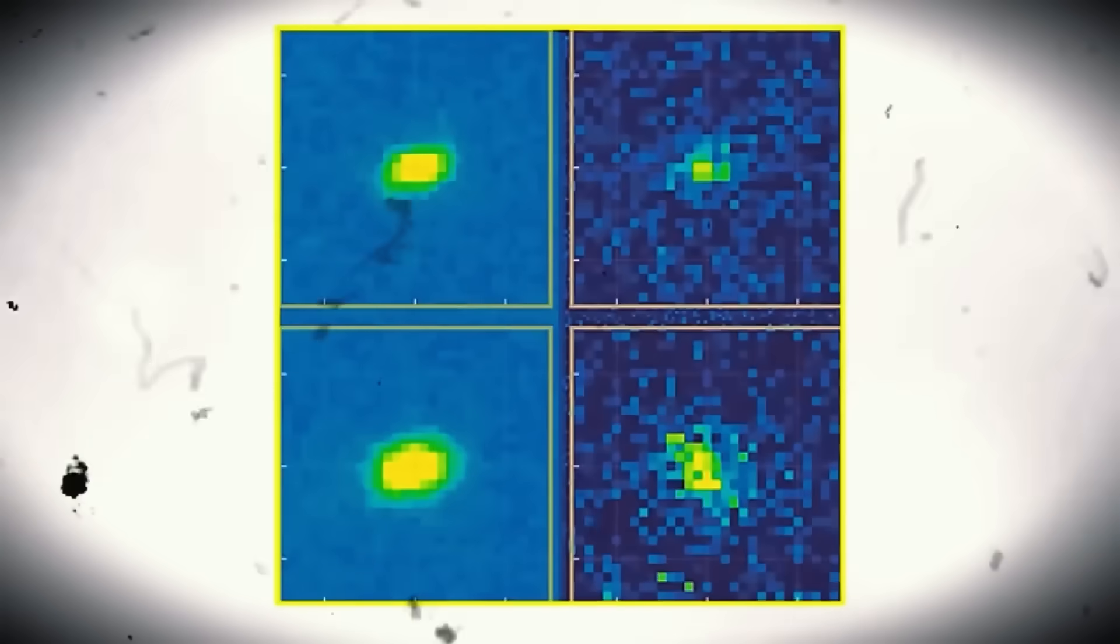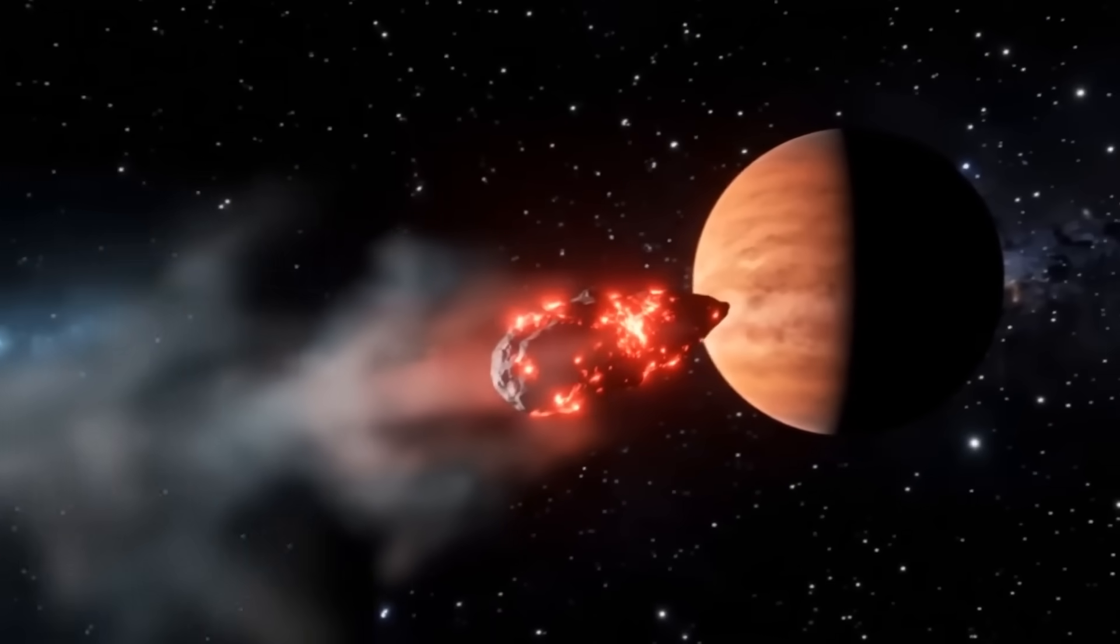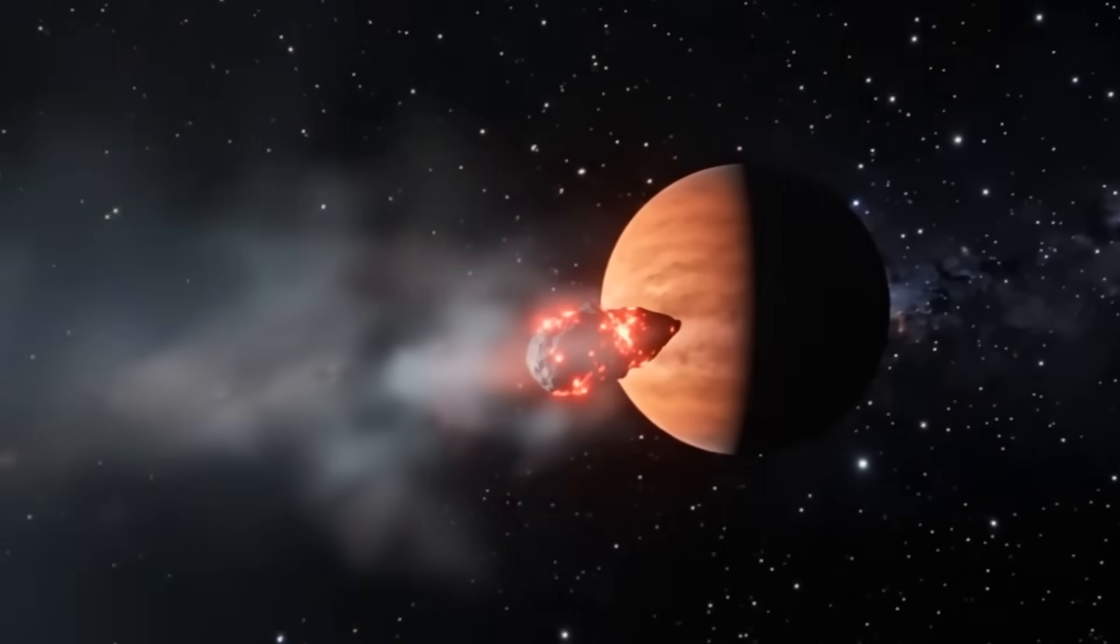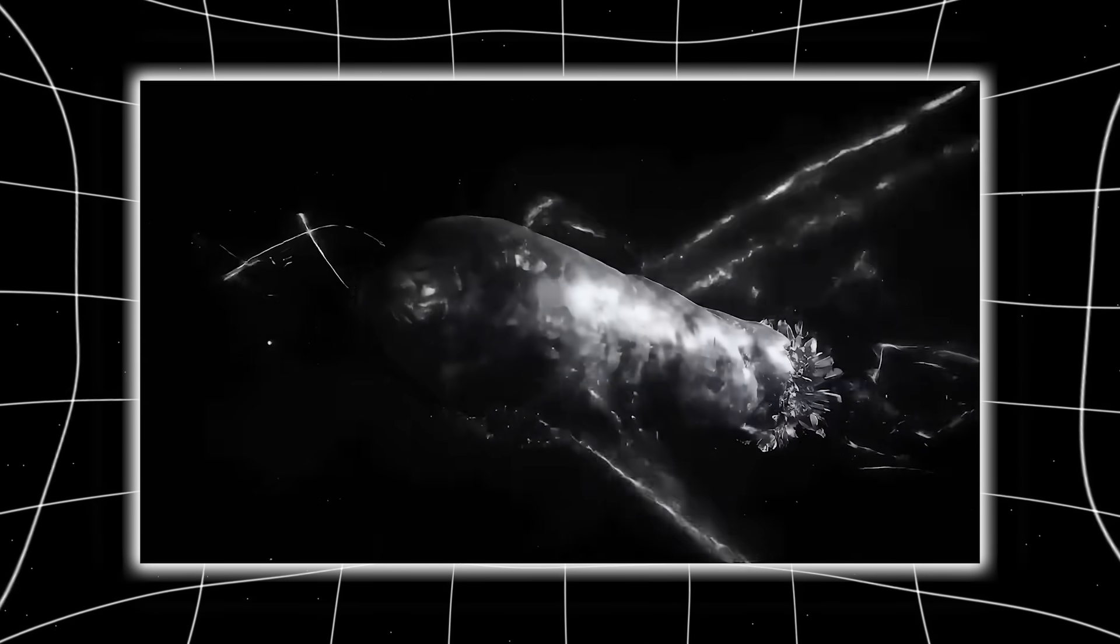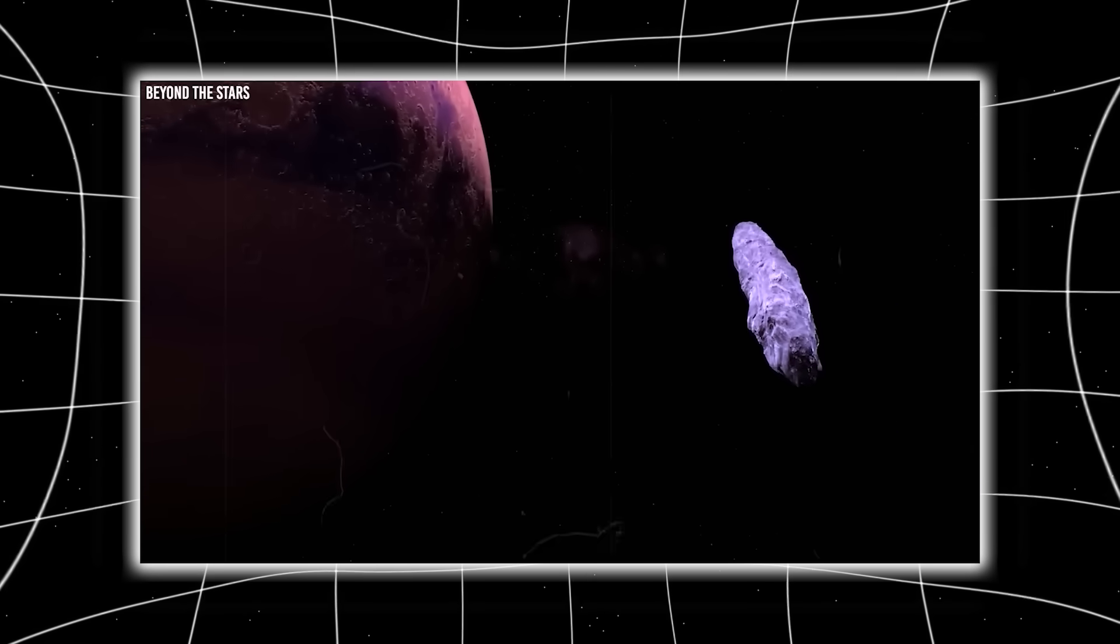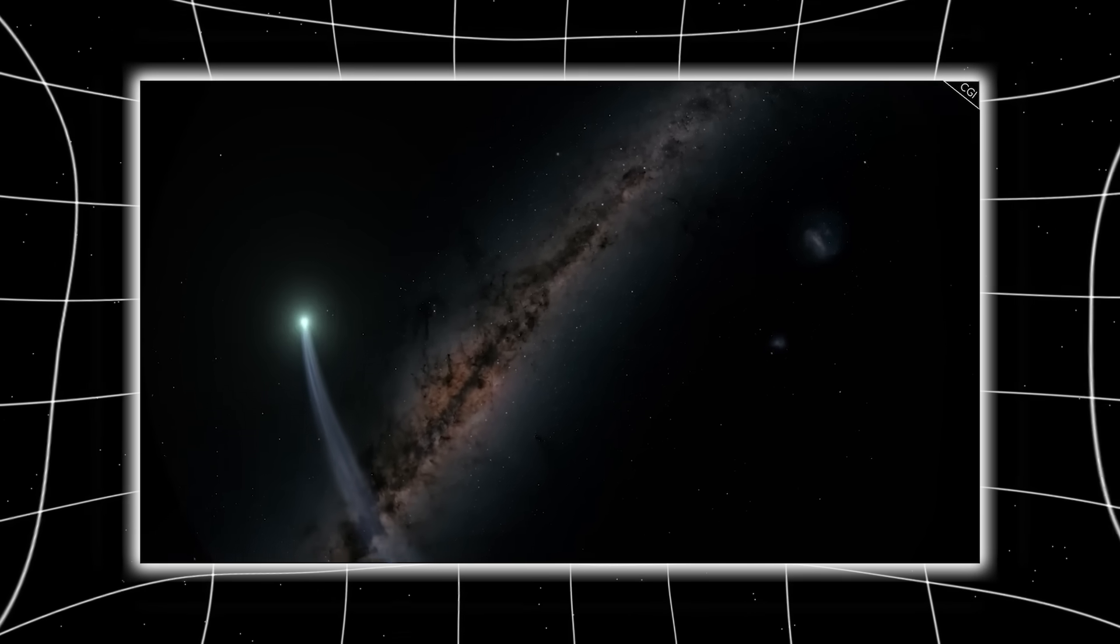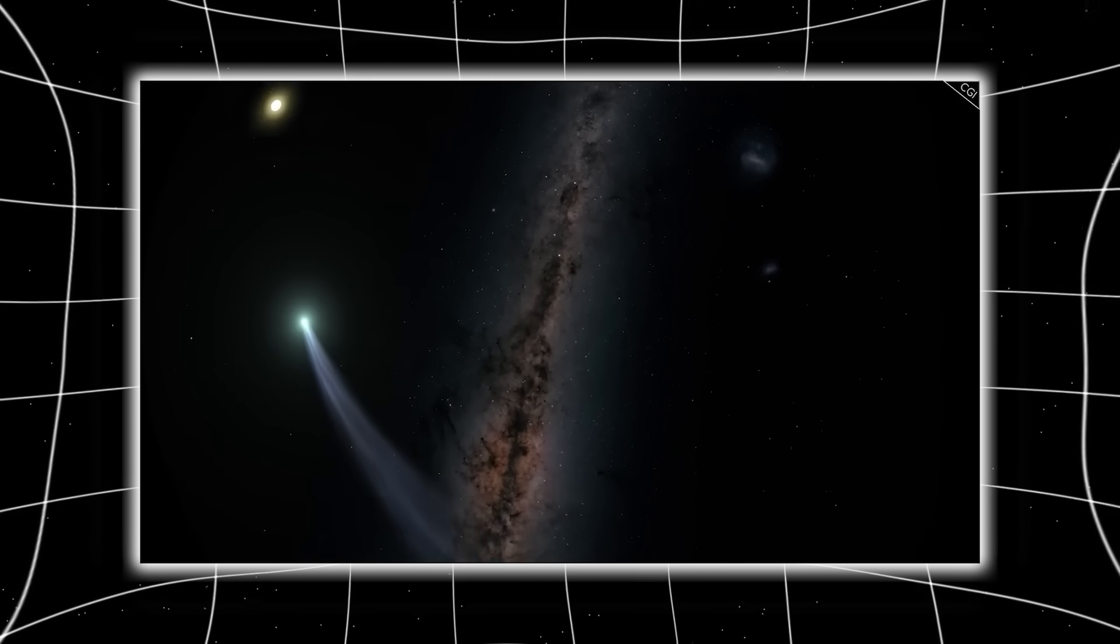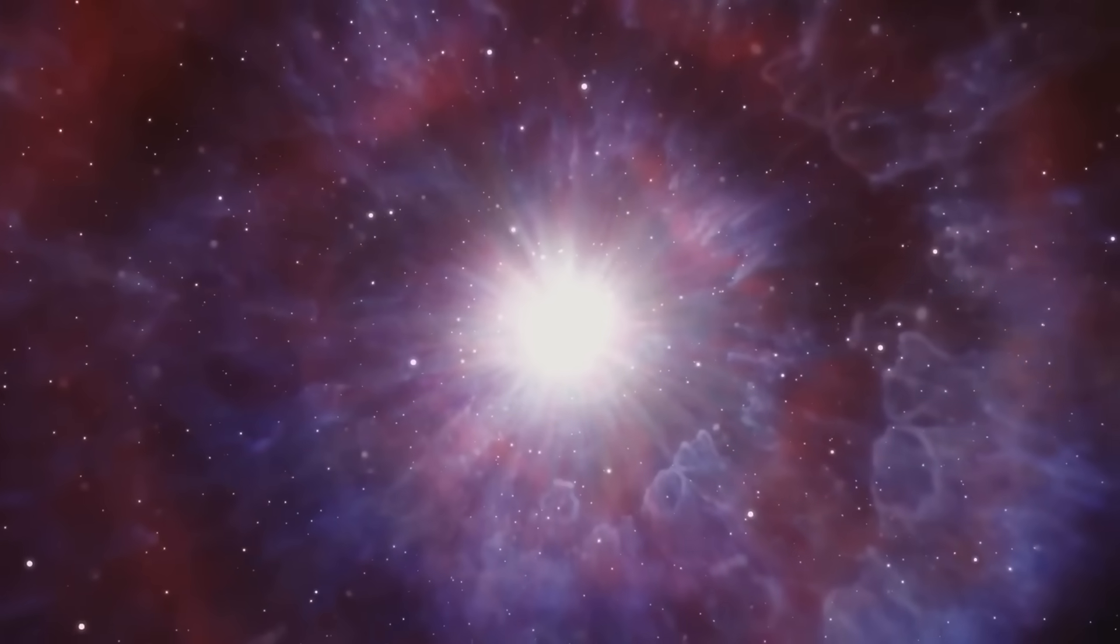Cold objects glow red. Dust scatters light red. Comets redden as they approach the Sun. But Atlas defied all of this, glowing blue at a temperature exceeding 5,800 Kelvin, despite being expected to be 20 times colder than the Sun's surface. Natural dust does not do this. Natural ice does not do this. Natural comets do not do this. This is light behavior consistent with ionized gas emission, or reflective metals, or engineered surfaces, not melting ice.